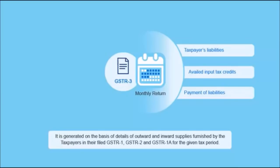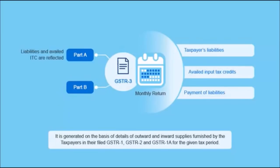GSTR 3 has two parts: Part A and Part B. In Part A, the liabilities and availed ITC are reflected. In Part B, the tax payment details are to be declared.